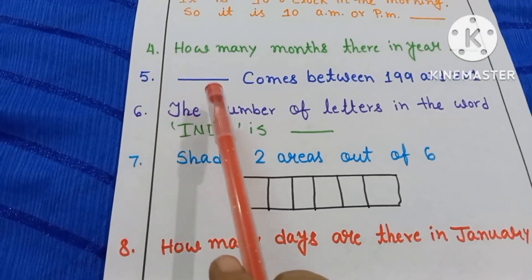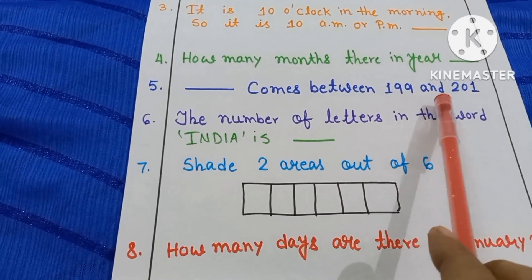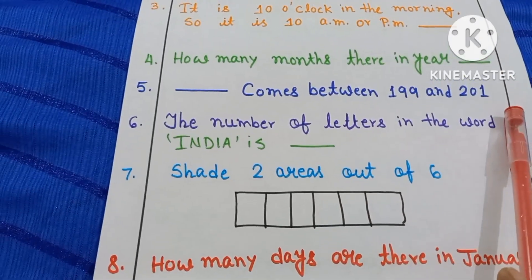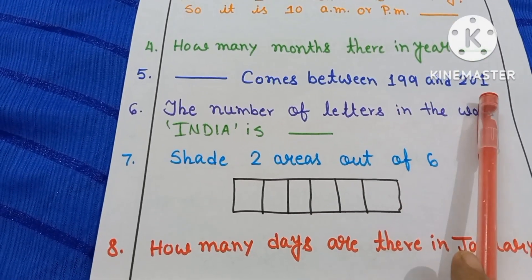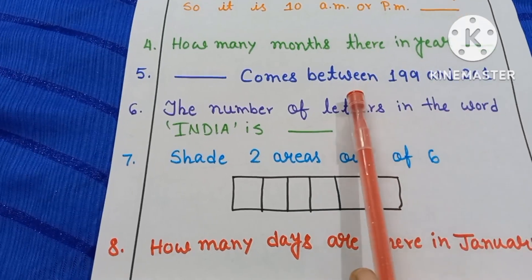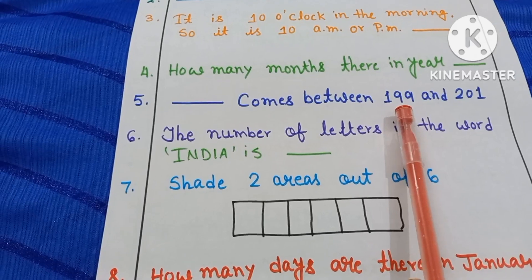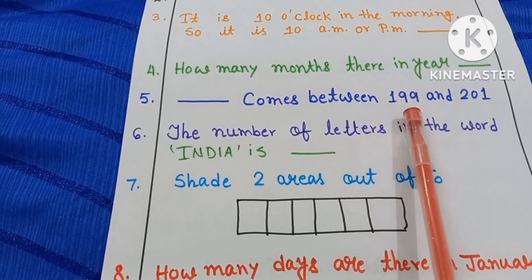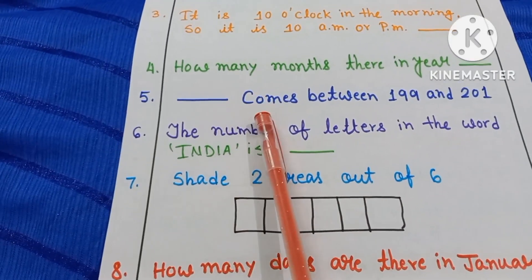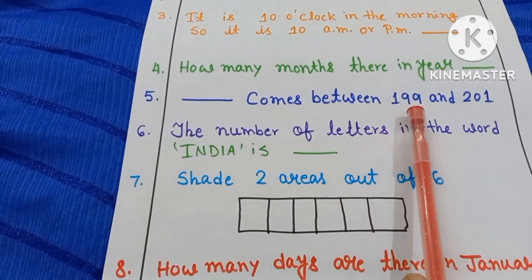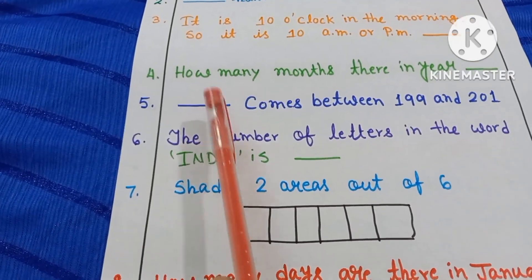Number 5. Dash comes between 109 and 201. What comes between 109 and 201? What comes after 109? You have to count. After 109, 200. So 200 comes between 109 and 201. So here you have to write 200.